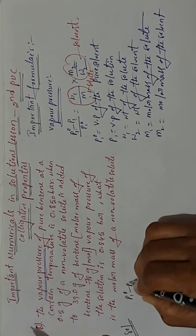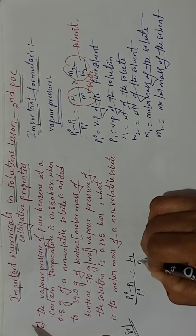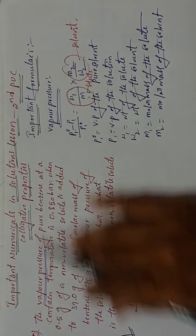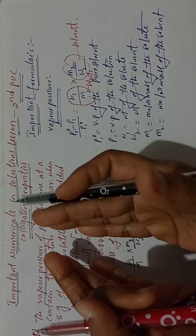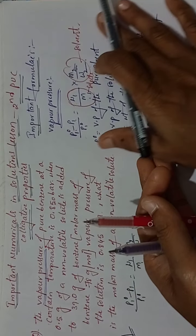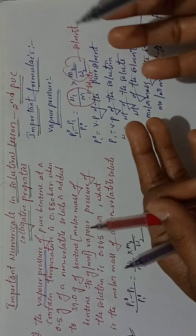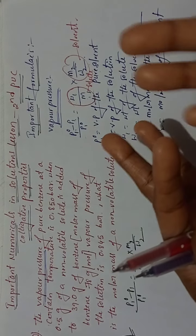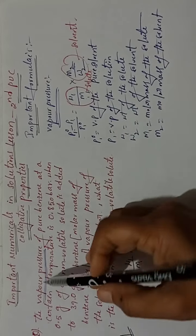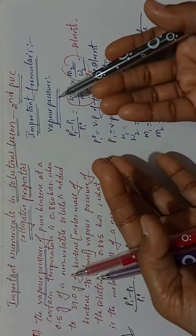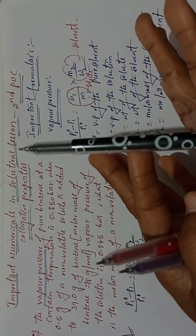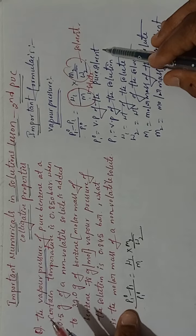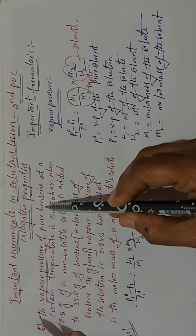Write the formula: (p1⁰ − p1) / p1⁰ = (w1 / m1) × (m2 / w2). In this problem, the vapor pressure word is the clue — whenever you see vapor pressure, immediately use this formula. Some students get confused about which formula to use, so remember: vapor pressure word → use this formula.